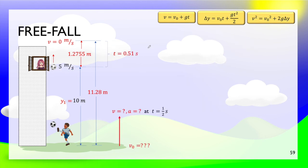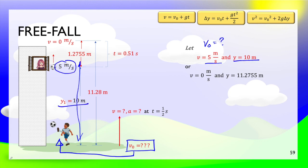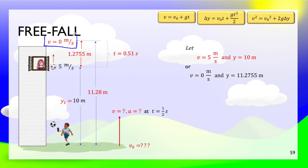The last question asks for the initial velocity of the ball. You can use different starting and end points. One approach: from the ground to the window — the ball has velocity 5 meters per second at 10 meters height, and you solve for the initial velocity. Another approach: from the ground to the maximum height at 11.28 meters, looking for the initial velocity. It depends on what values you are comfortable solving with.